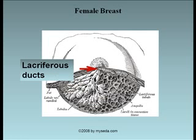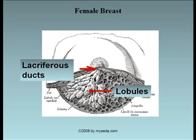Each adult female breast consists of around 15 to 20 lobules which radiate out from the nipple. The lactiferous duct from each lobe opens separately on the summit of the nipple and possesses a dilated portion, which we call the lactiferous sinus or ampulla. Each lobe is a cluster of alveoli drained by a lactiferous duct.